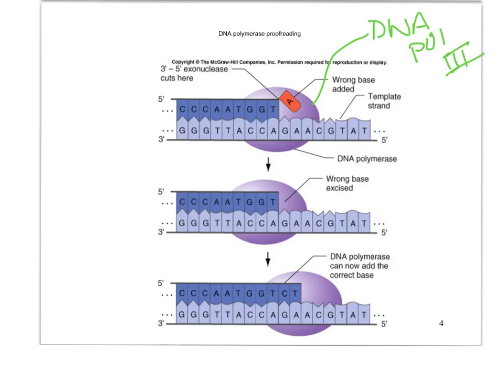If a wrong base was added, as you could see here, this A does not belong with this G, then the DNA polymerase itself has that 3' to 5' exonuclease activity and can cut that guy right out of there and then move on and continue adding the correct ones. And so that's all DNA polymerase proofreading is. So lots and lots of mistakes are fixed just by DNA polymerase itself during proofreading.